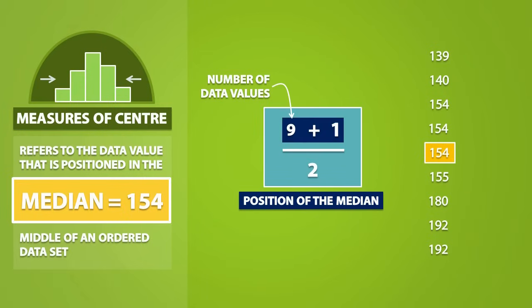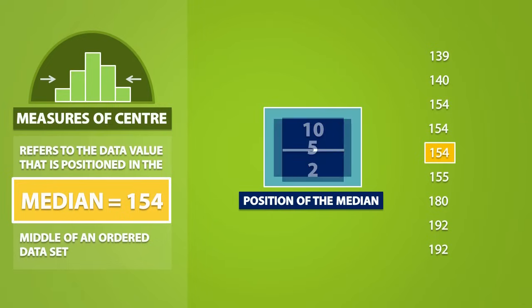And 9 plus 1 is equal to 10, and 10 divided by 2 gives us 5. As a result, the median is equal to the value in the 5th position, which is equal to 154.